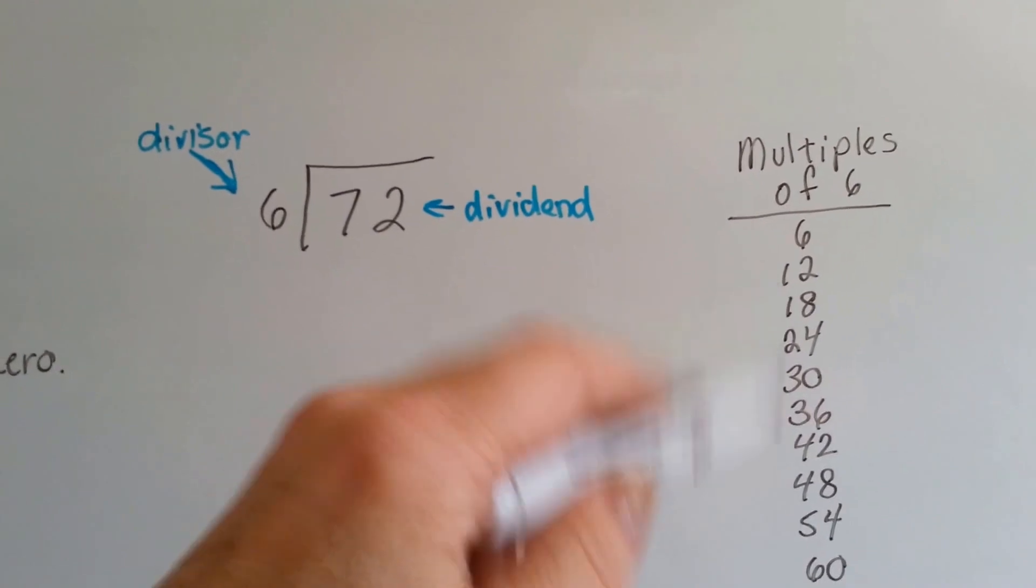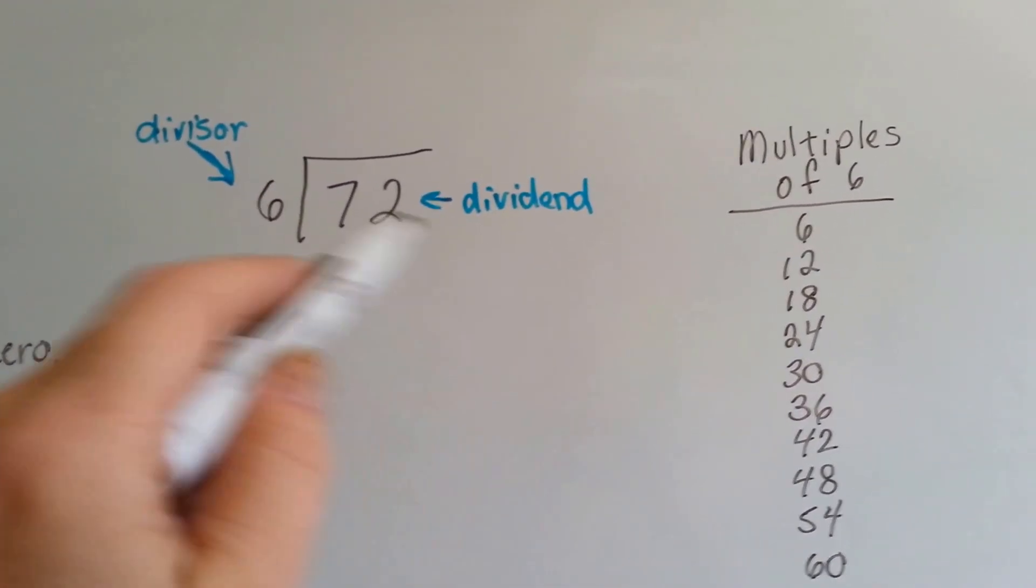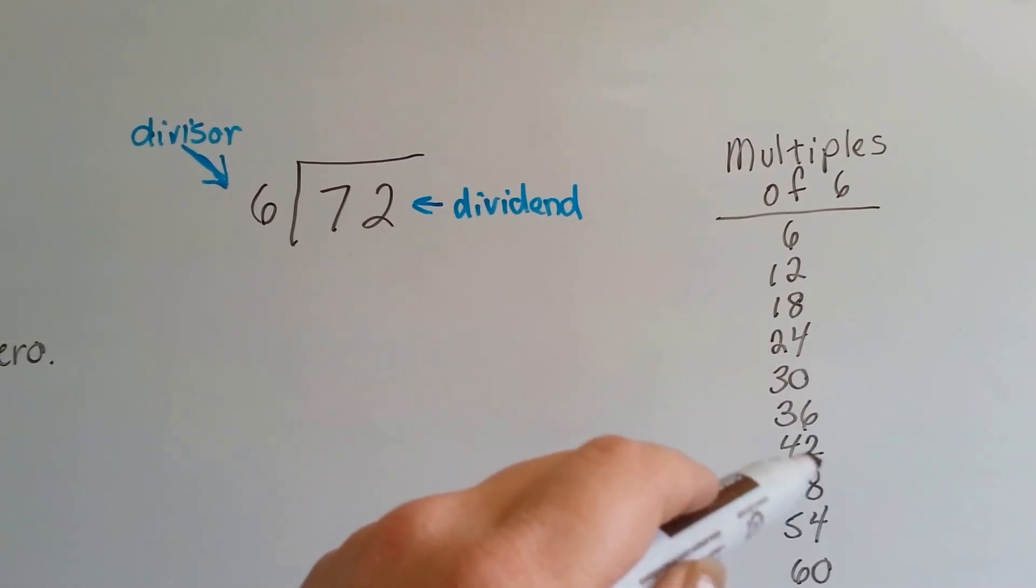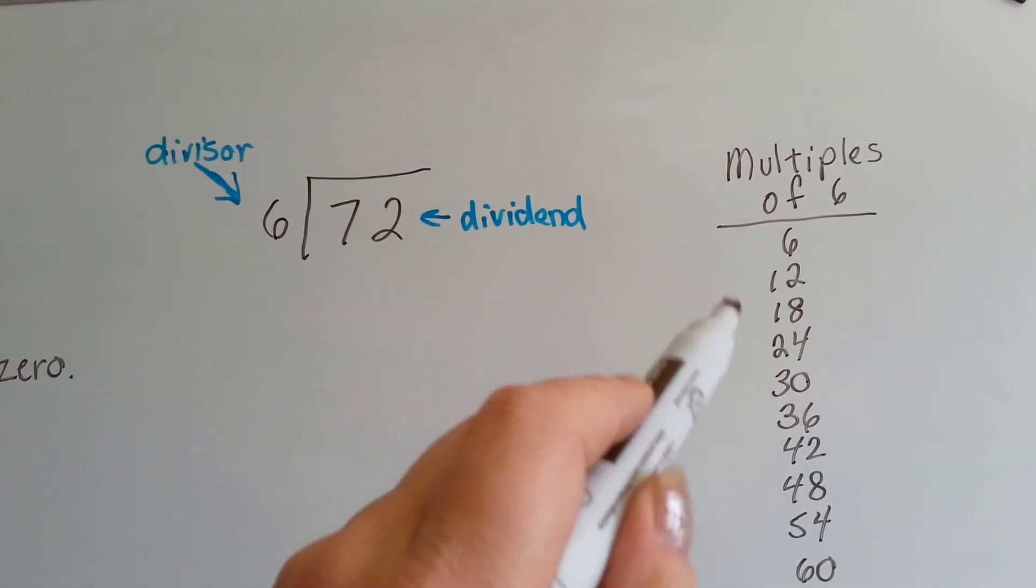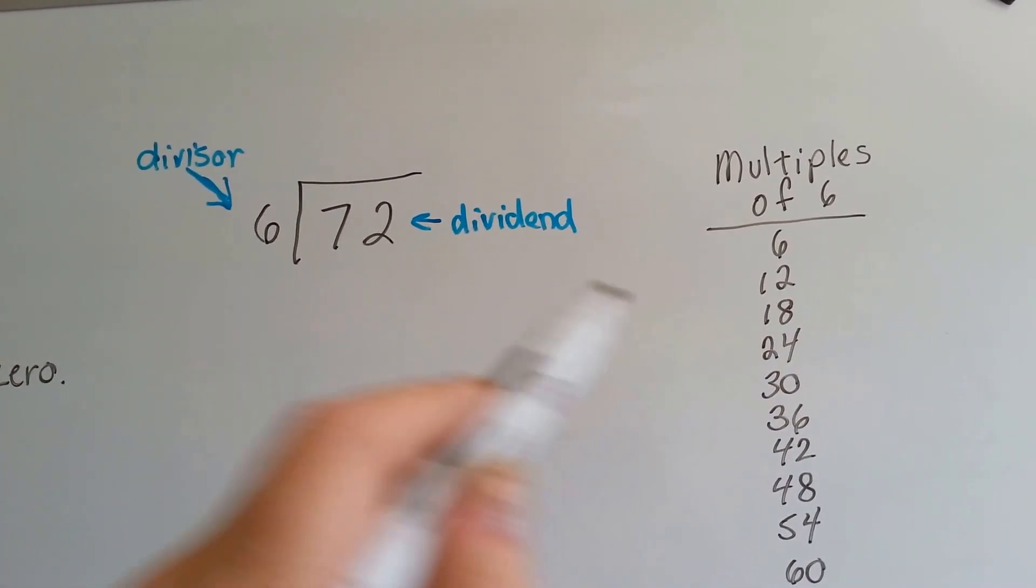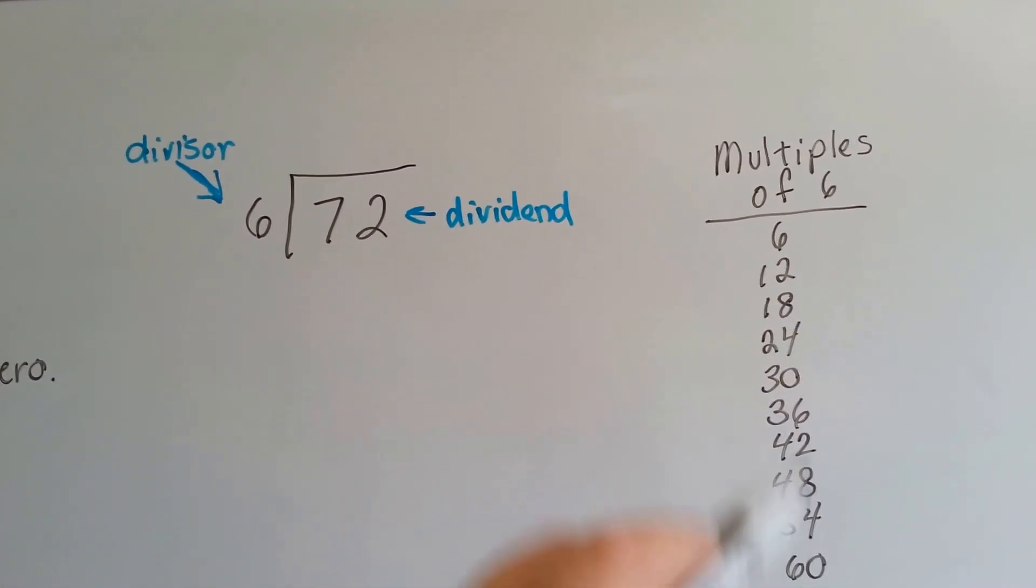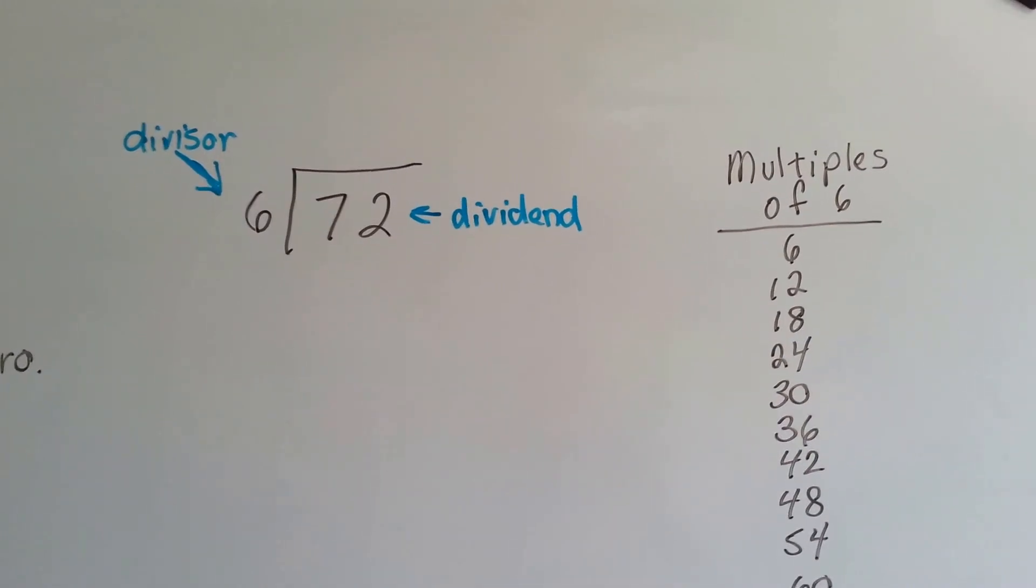They're the answer to a multiplication problem when you multiply the divisor by a counting number. So, 6 times 4 would be 24. 24 would be a multiple of 6. You're not allowed to multiply it by a fraction or anything like that. It's got to be a counting number.